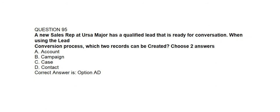Question number ninety-five. A new sales representative at URSA Major has a qualified lead that is ready for conversion. When using the lead conversion process, which two records can be created? Option A: Account. Option B: Campaign. Option C: Case. Option D: Contact. Correct answer is Option A and Option D: Account and Contact.